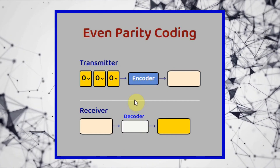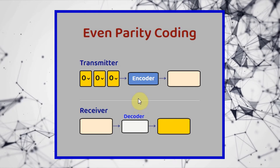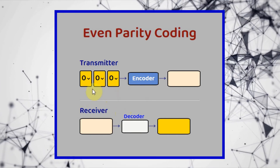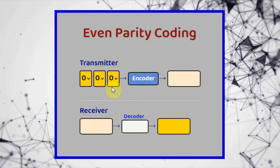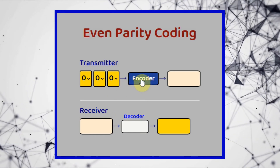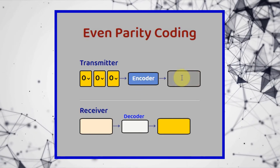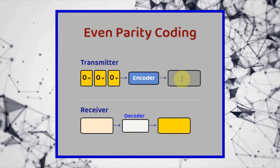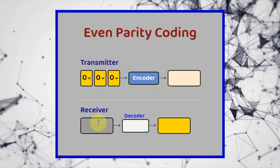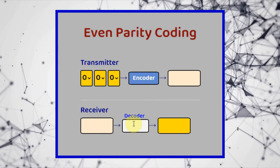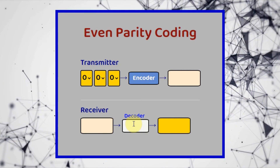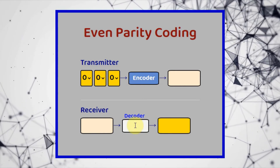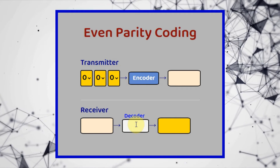To demonstrate even parity coding, I have designed this interactive web page, where we have transmitter and receiver elements of a communication system. On the transmitter side, our message is 3 bits wide, fed into the encoder that generates the parity bit, which is added to the message to give us the 4-bit codeword. The generated codeword is then sent over a noisy channel, and at the receiver side it is received and checked by the decoder. If the received codeword has no error, then the decoder will extract the message and pass it to the destination. If the decoder detects a single error in the received codeword, then an error message will be issued.